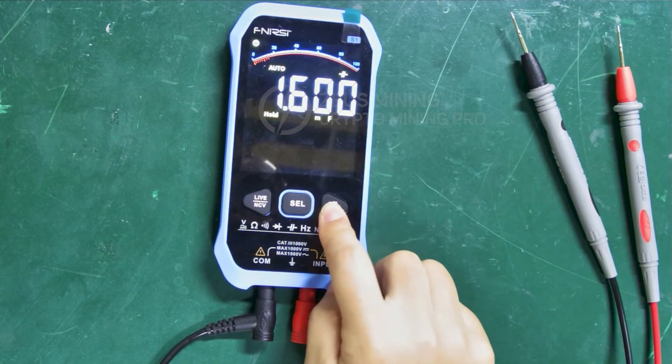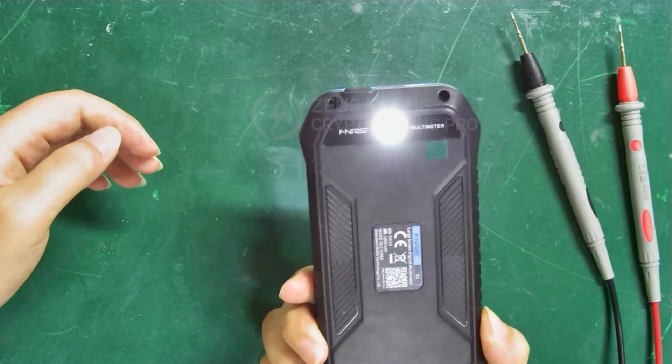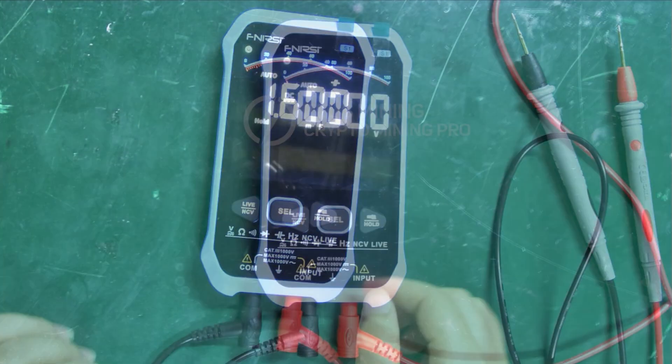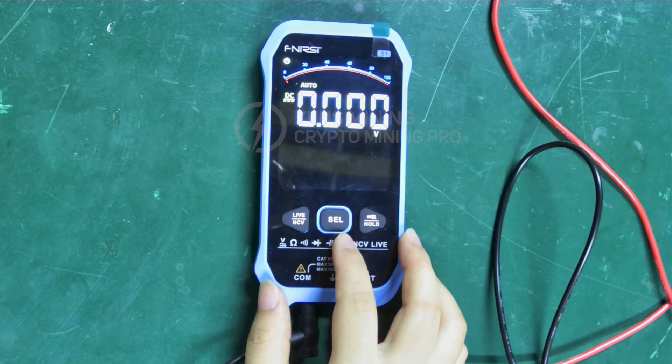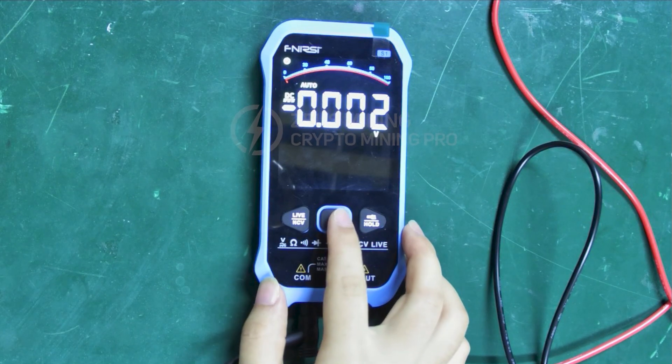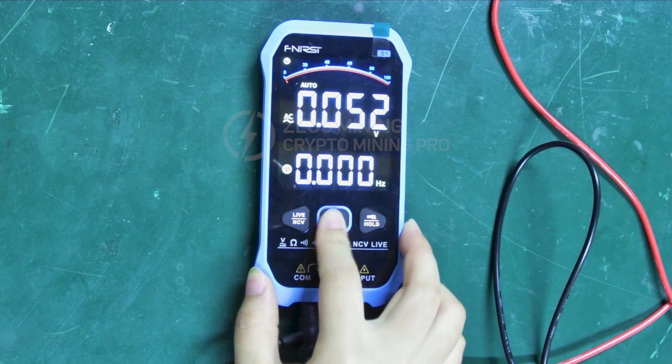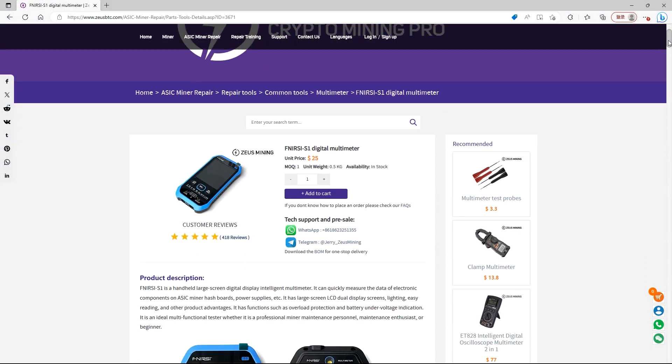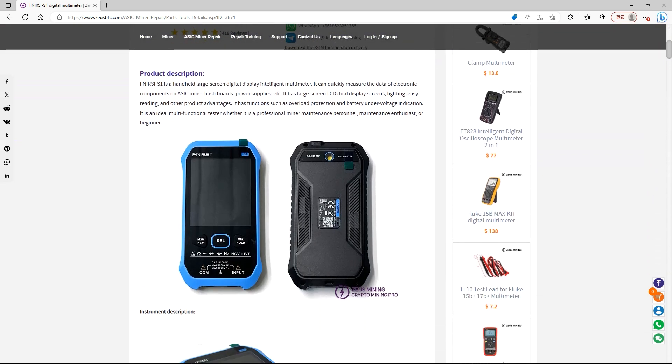Press and hold the right button and it can also turn on the flashlight function, which will make our measurement more convenient. What's more worthy of recommendation is that it's a smart multimeter with no need to change gears and with anti-burn protection. Even if the gear is set wrongly during measurement, the multimeter won't be burned out. Well, these are the usage methods of this multimeter. Welcome to leave messages in the comment area.